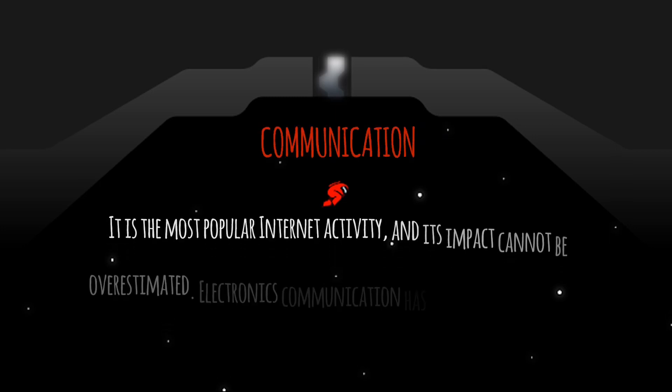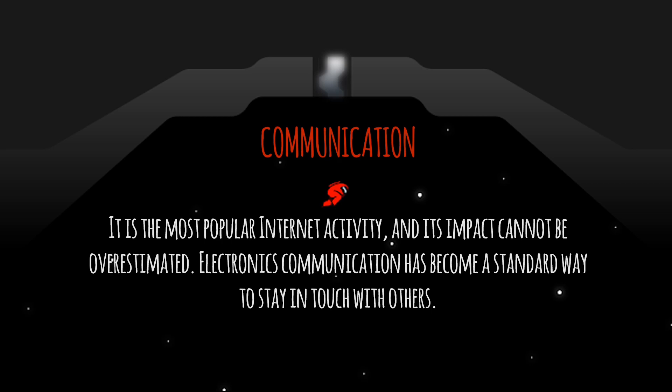Next is Communication. It is the most popular internet activity and its impact cannot be overestimated. Electronic communication has become a standard way to stay in touch with others. The computer does this by sending data to one or more other computers who decode the message and allow the recipient to send a message back. Some popular types of internet communication are email, messaging, social networking, blogs, microblogs, webcasts, podcasts, and wikis.